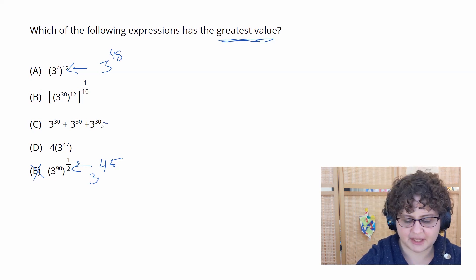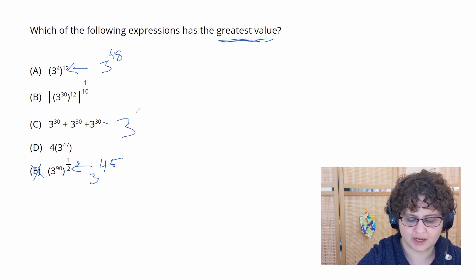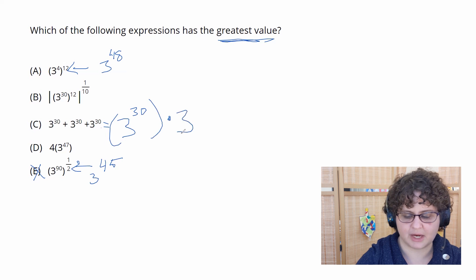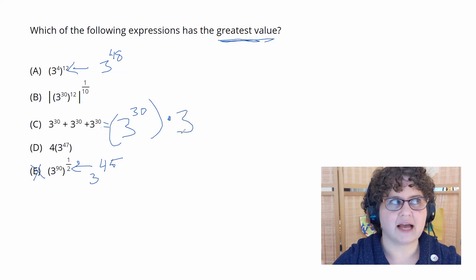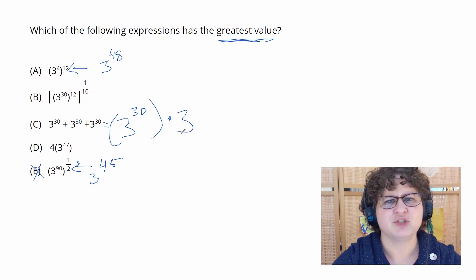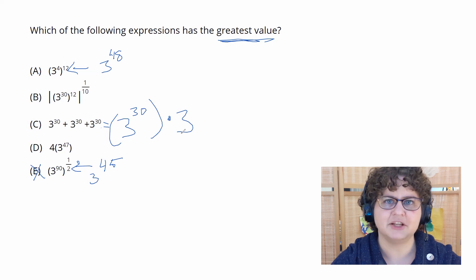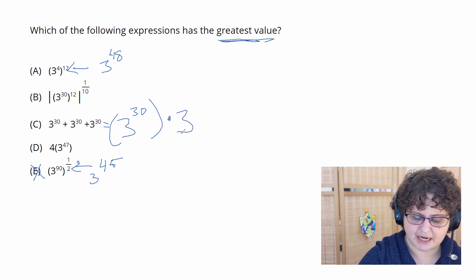One way to think about this is we have 3 to the 30th three times, so literally 3 to the 30th times 3. You can even think about that as 3 to the 31st, which is way smaller than 3 to the 48th. We have a bunch of 3 to the 30th. Those are teeny tiny relative to 3 to the 48th, so that goes out.